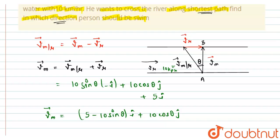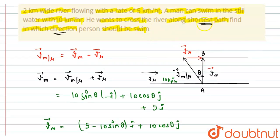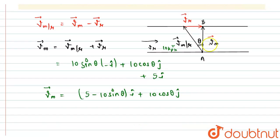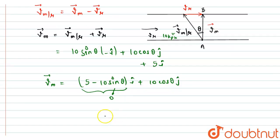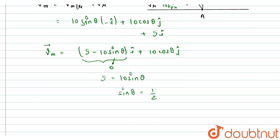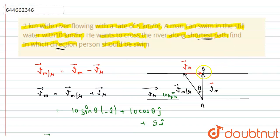This is the velocity of the man. For the man to cross the river by the shortest path — exactly from A to B — the horizontal component of velocity must be zero. From here we get 5 equals 10 sin theta, so sin theta equals 1/2, which means theta equals 30 degrees.